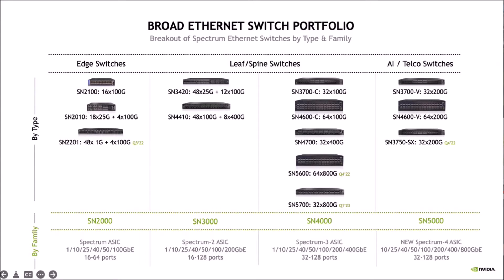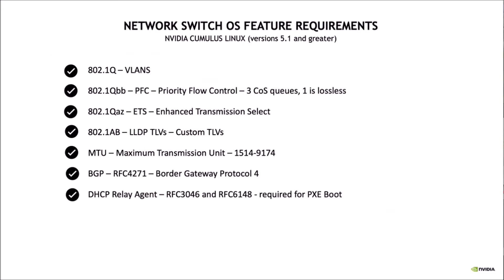We will be looking to add the SN5000 series as that hardware becomes available and we're able to get it in the labs and get them tested and certified. But those switches with the Spectrum 4 ASICs will all run Cumulus Linux. All the switches on this page run Cumulus Linux, and we're currently on version 5.3.